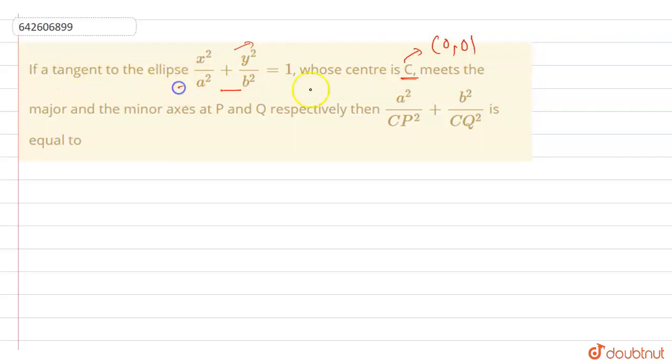So the question tells, if the tangent to this ellipse meets the major axis and the minor axis at P and Q. So we have been given an ellipse. Let me draw it. So this is an ellipse and this is the minor axis and this is the major axis. So there is a tangent to this at this point, assume. So this will be something like this.